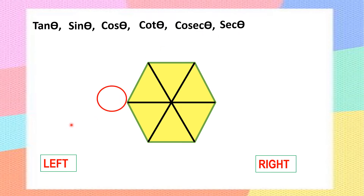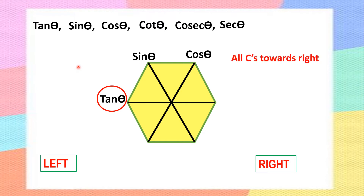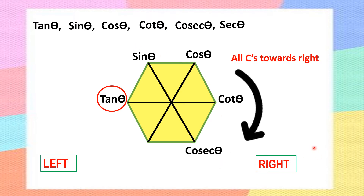Always start from the top-left point of the hexagon towards your left-hand side: tan theta, then sine theta, then cos theta. All C's — cos, cot, cosecant — go towards the right-hand side, followed by secant theta. The mnemonic to remember this is 'tries something cool': tan, sine, cos — and all C's to the right: cot, cosecant, secant. If you remember this order, you can write all six trigonometric ratio formulas.